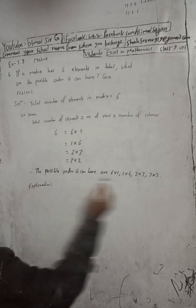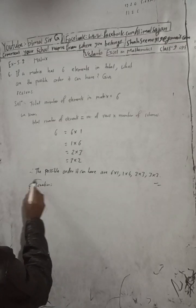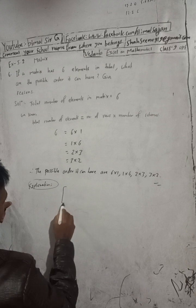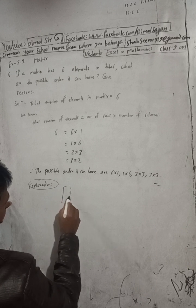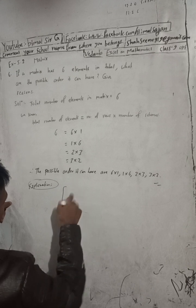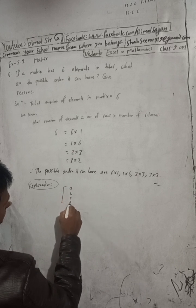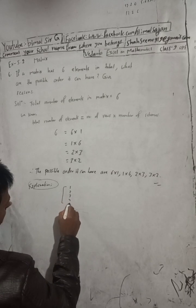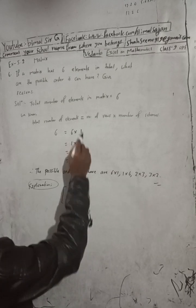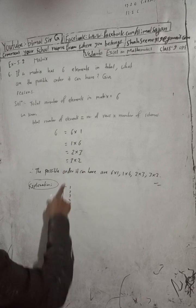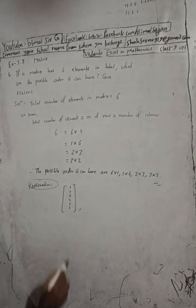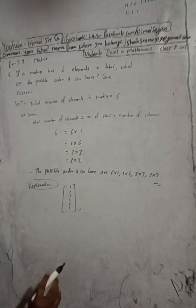I will now explain each order. For 6 into 1: it has 6 rows and 1 column, with elements A, B, C arranged in 6 rows and 1 column — 1, 2, 3, 4, 5, 6. This is a column matrix.